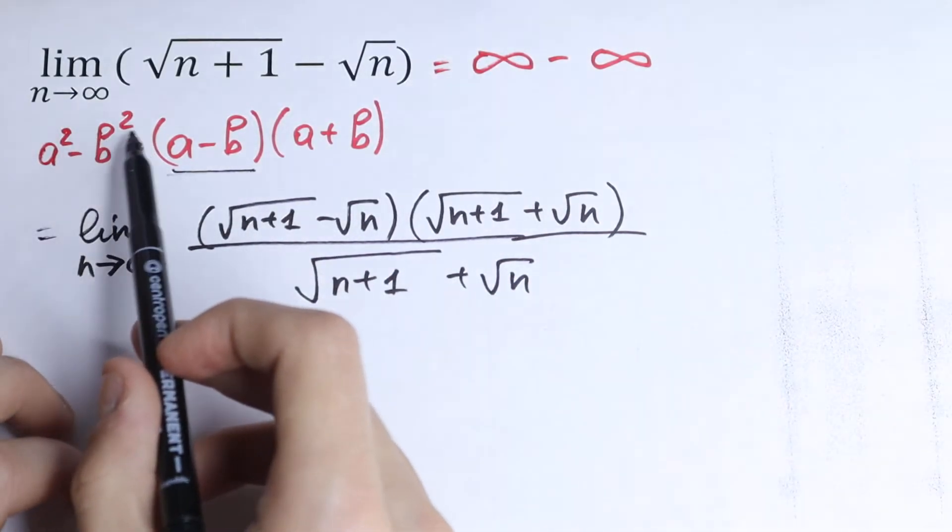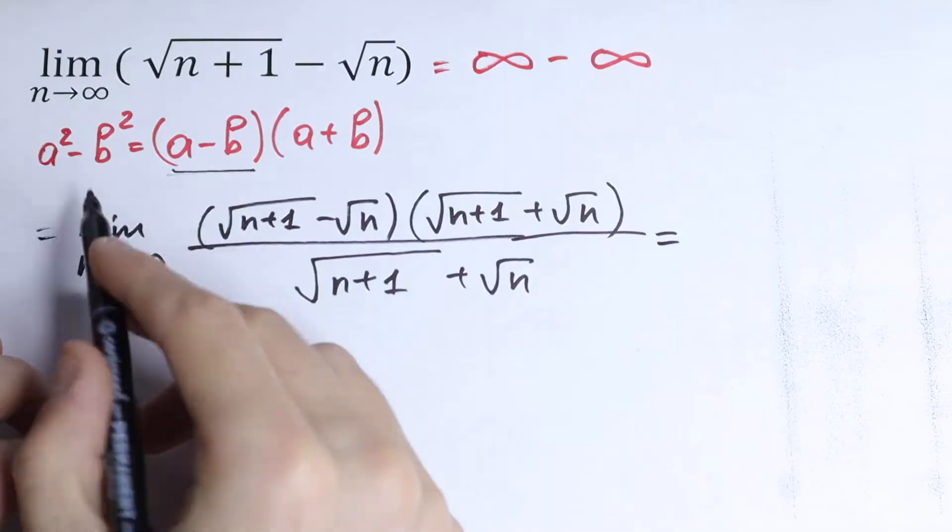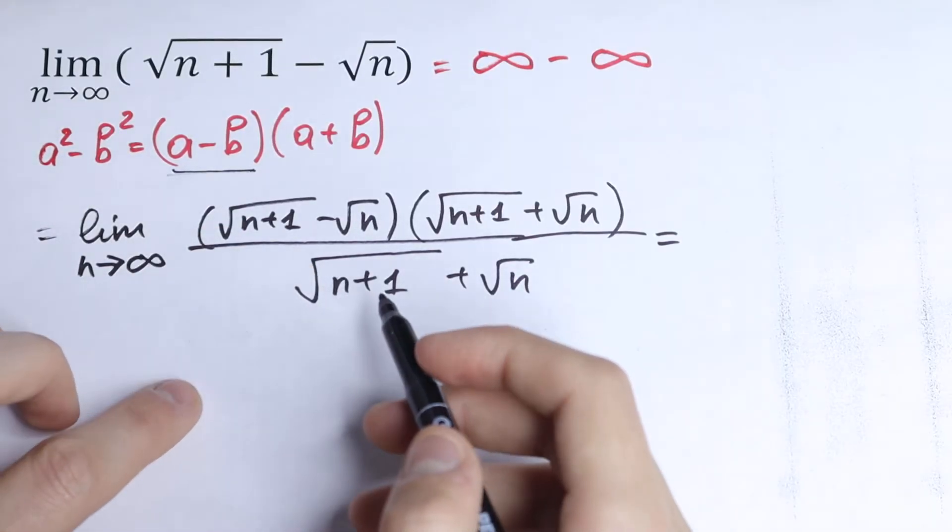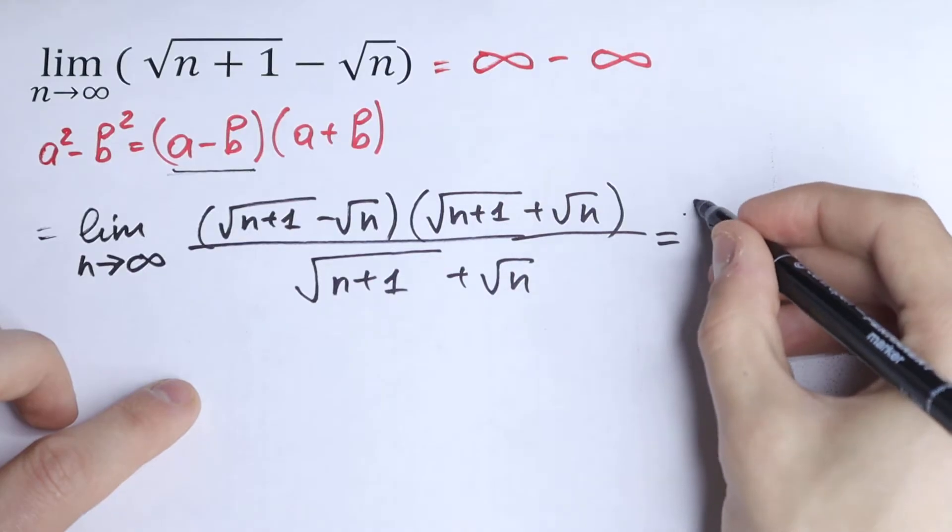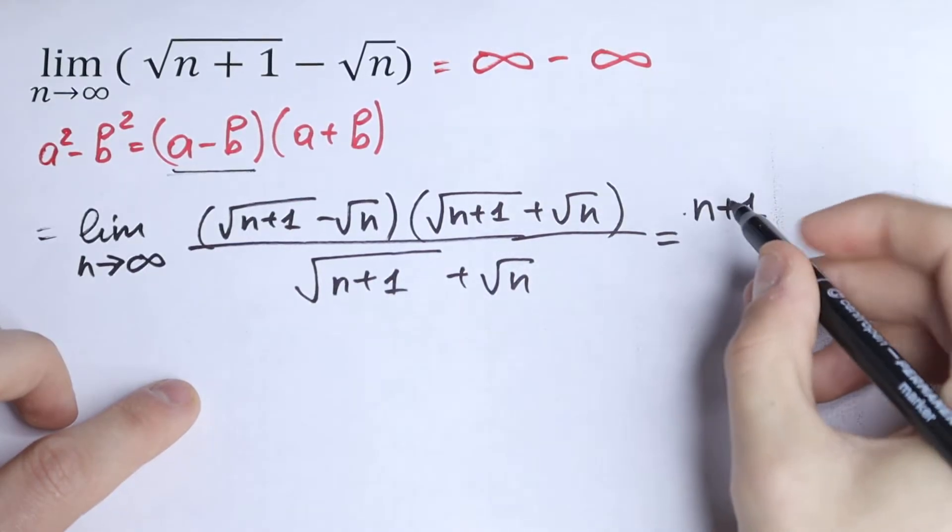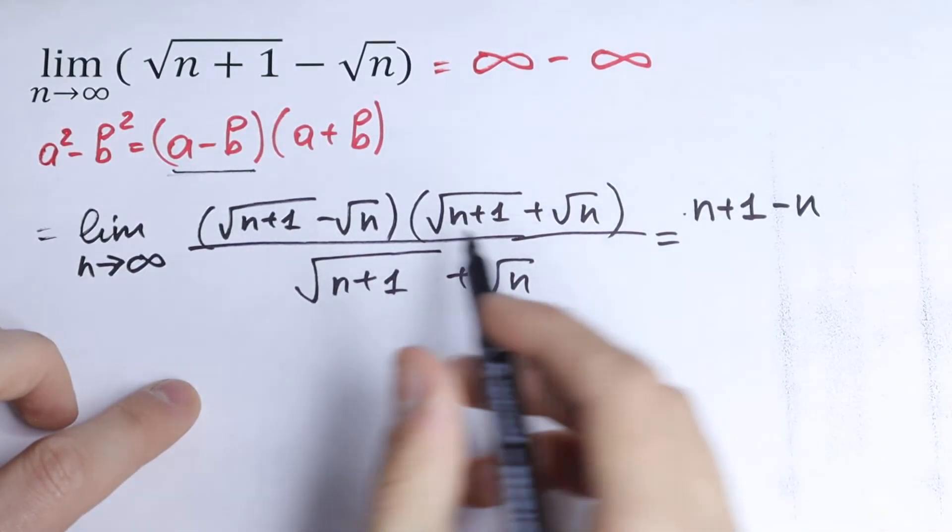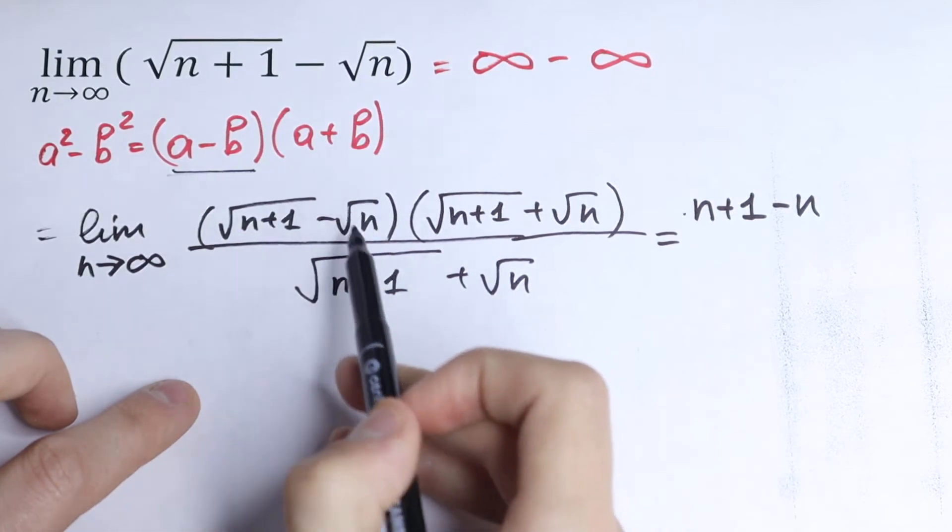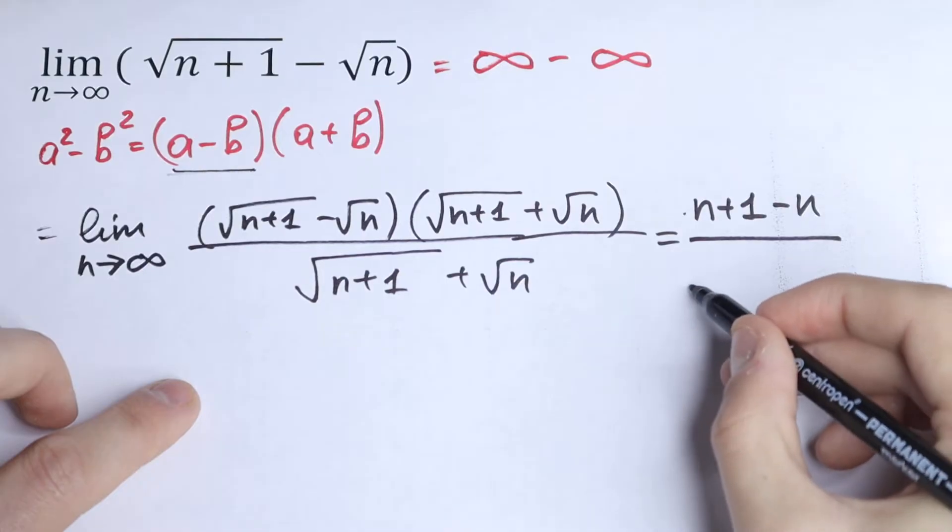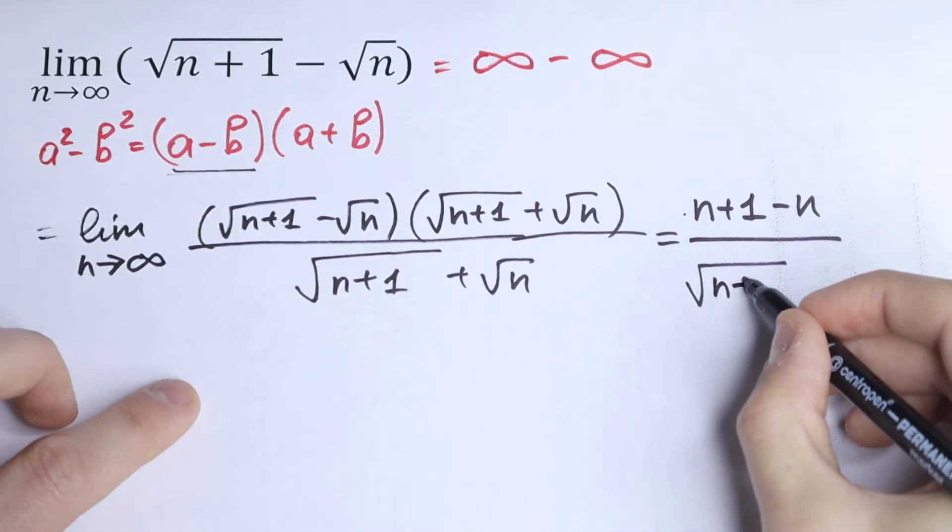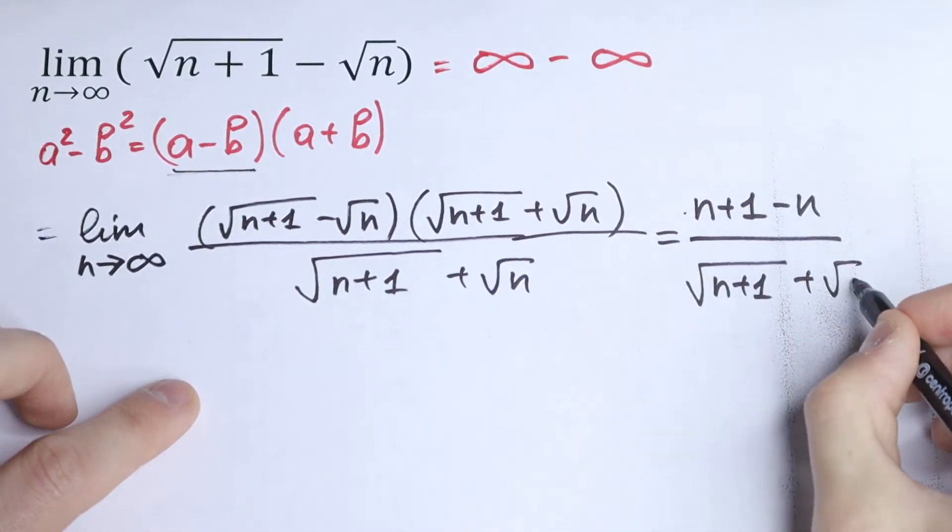So this will be our formula, and we will have a squared minus b squared. So as a result we will have n plus 1 minus n, because we raise this to the second power and this. And the square sign will disappear over square root of n plus 1 plus square root of n.